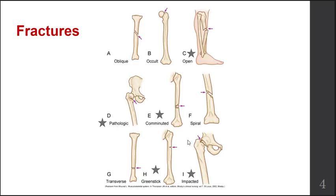Next up is a comminuted fracture. This is when there's a fracture with two or more pieces or segments of bone, so it's sometimes called a segmented fracture. This can be more problematic for overall healing and can be difficult to repair. Sometimes these individuals require multiple surgeries. The fragment of bone that's left behind may not get the blood supply that it needs, but we'll talk about blood supply and repair shortly.